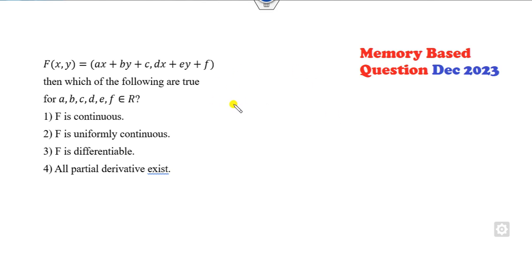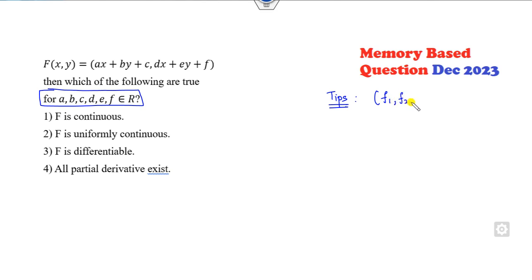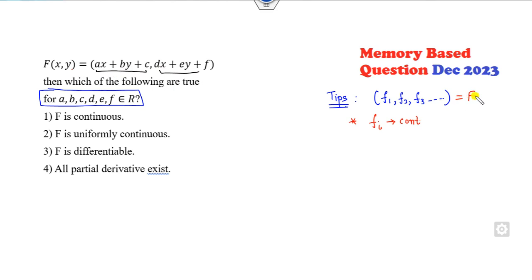This question I already explained earlier, but now I got the condition that some students said this condition is also given. So what is the shortcut tip? Remember, whenever you have a function like F1, F2, F3 and so on — in this case this is F1, this is F2 — when they are said to be continuous: if the Fᵢ's are continuous, then the complete function F is continuous.